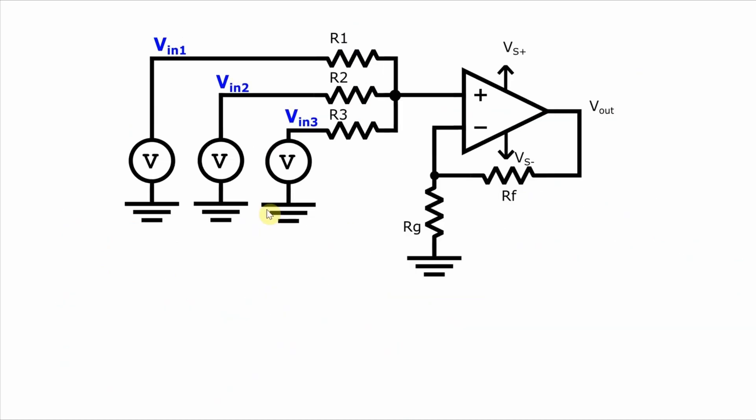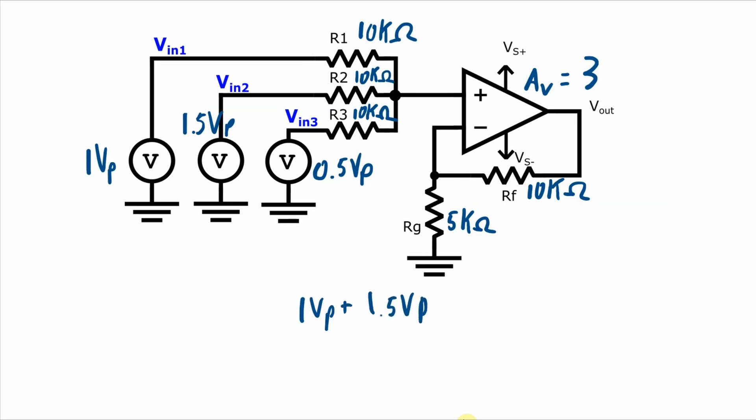Now let's do a couple of quick examples to help solidify these ideas that we've just gone through. Now let's say R1, R2, R3, and RF are all 10 kilohms. RG is 5 kilohms. So that makes the voltage gain of the op-amp 1 plus RF over RG, or a gain of 3. Now if VIN1, VIN2, and VIN3 are all 1 kHz signals in phase with each other, and VIN1 has a 1 volt peak amplitude, VIN2 has a 1.5 volt peak amplitude, and VIN3 has a 0.5 volt peak amplitude, the output will be 1 volt peak plus 1.5 volt peak plus 0.5 volt peak to give me a 3 volt peak output.